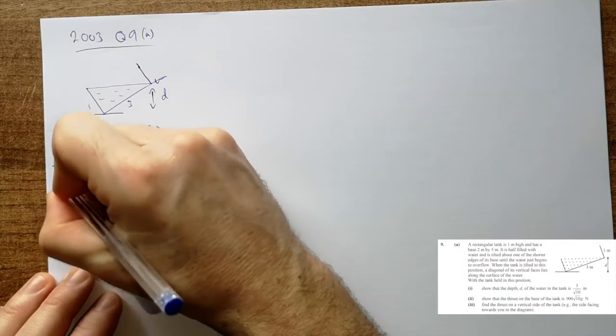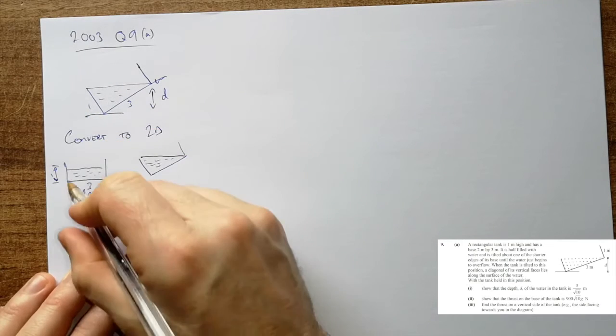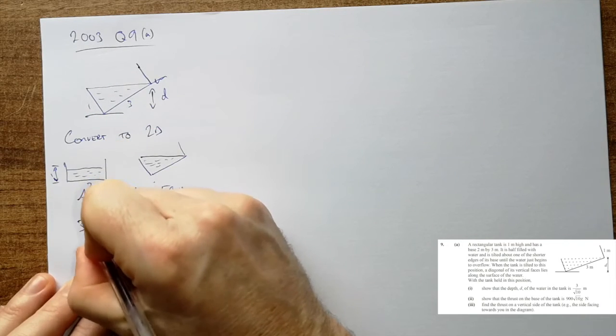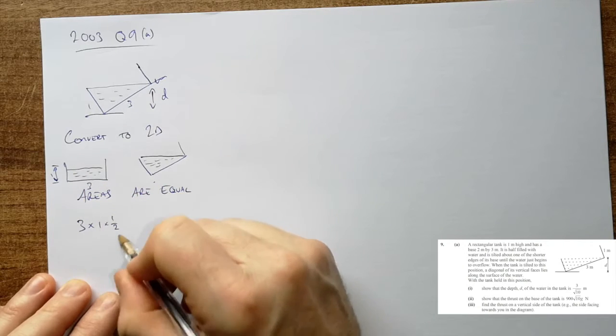The tank didn't tip over anything along the axis that would be going in this way. So the area there is equal to the area there. We know that that is 1, we know that that's 3. The area of this guy is 3 by 1 by a half because it's only half full.